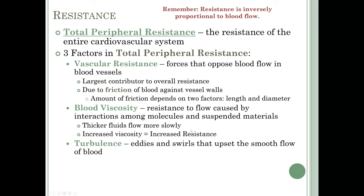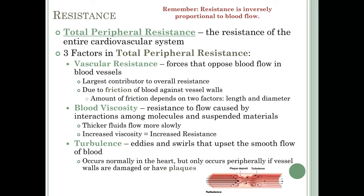The third factor affecting resistance is turbulence — eddies and swirls that upset the smooth flow of blood. Turbulence normally occurs in the heart as blood moves through the valves. Turbulence in peripheral blood vessels is not common or normal, and only occurs if vessel walls are damaged or if you have atherosclerotic plaques. When blood forces through a plaque deposit, it causes turbulence — blood flowing in multiple swirling directions instead of straight forward — which increases resistance.